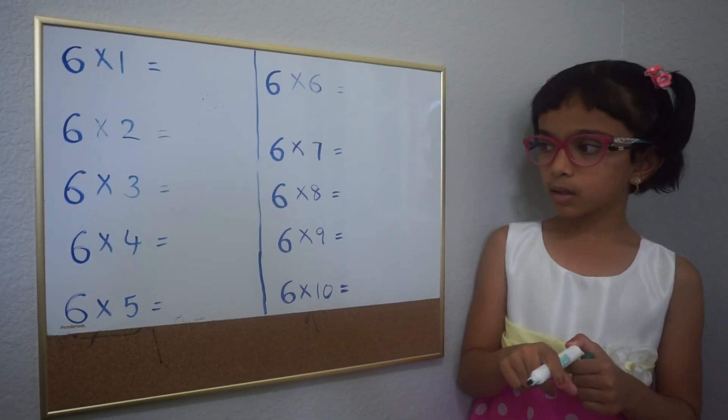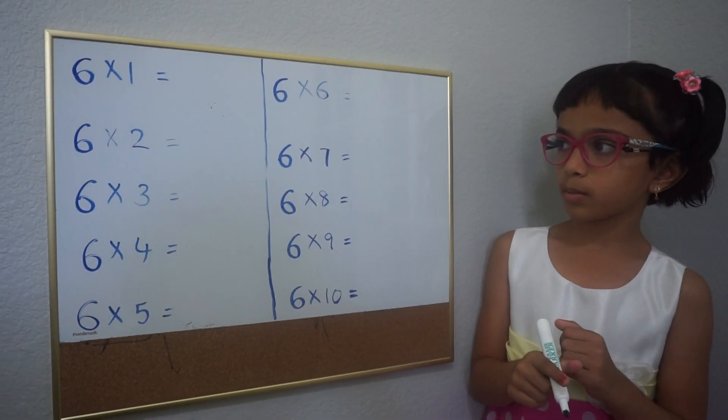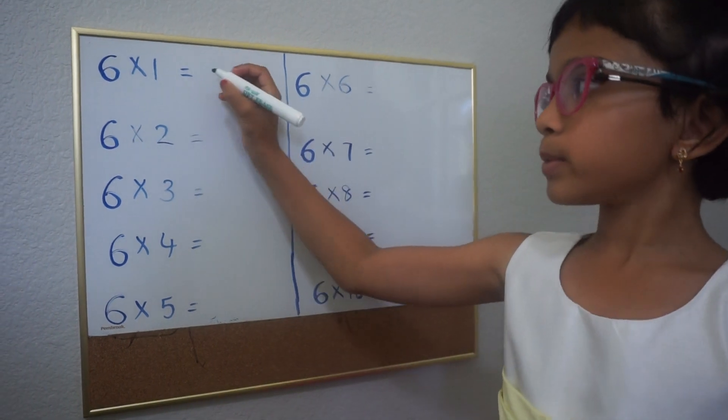Hi, today I'm going to tell you a simple trick for the 6 times table. 6 times 1 is 6.